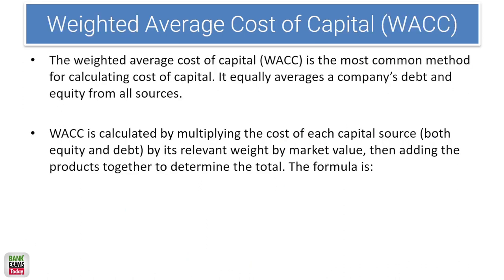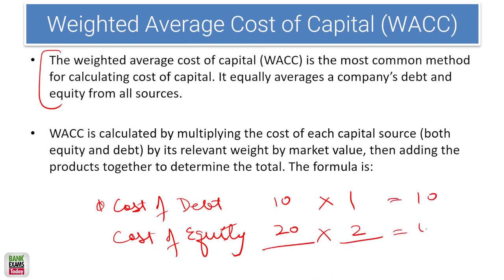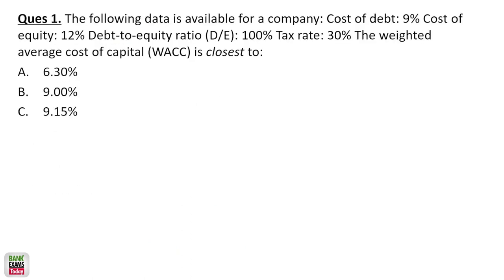Weighted Average Cost of Capital (WACC) is the most common method to calculate the cost of capital. Once you have the cost of debt and cost of equity, you apply their respective weights. For example, if cost of debt is 10%, cost of equity is 20%, weight of debt is 1, and weight of equity is 2, then WACC = (10 + 40) / 3 = 50/3. Very simple — just like weighted average from school.